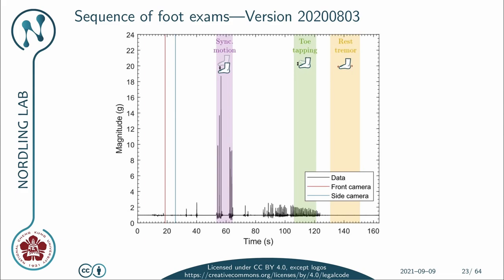For the foot experiment, we again have accelerometer data. We start with the sync motion where the subject lifts the foot up and down, then a pause, then a demo video for toe tapping, then another pause followed by a demonstration for rest tremor and then recording it. In the latest update, we have replaced the sync motion with the leg agility test, because now that we have changed chair, we can do that safely for all subjects.